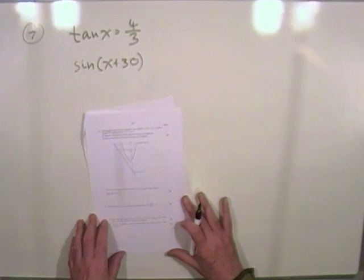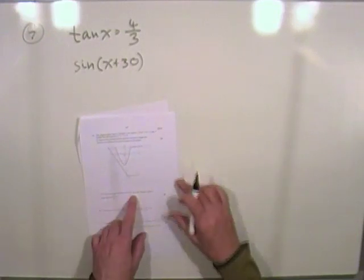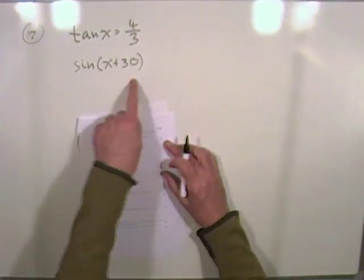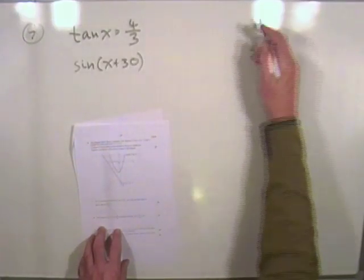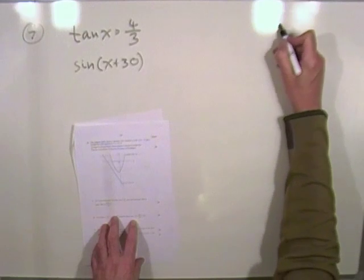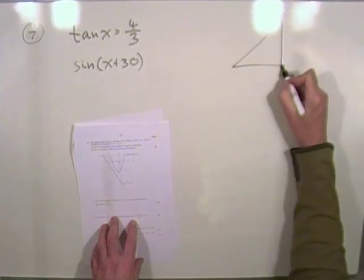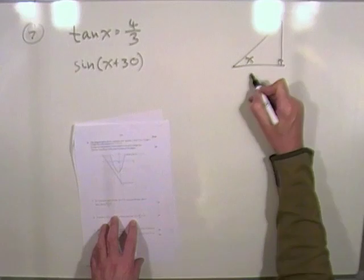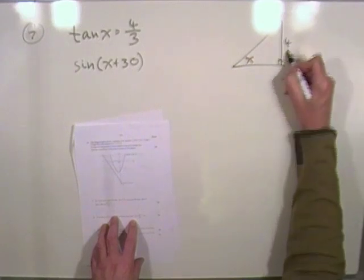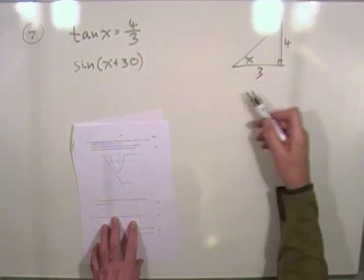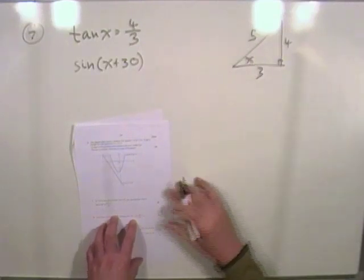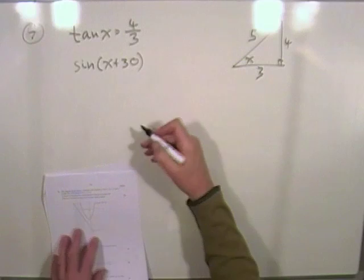Question 7. If x is an acute angle such that tanx is 4 upon 3, show the value of this equals the expression given here. Well, that's the case where you just construct a triangle. So for this angle x, it's tangent, opposite over adjacent, it's tangent is 4 upon 3. So work out the hypotenuse. You recognize that instantly. It's a 3, 4, 5 triangle.